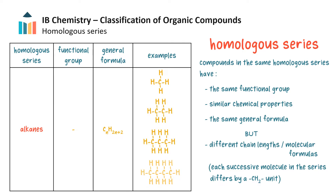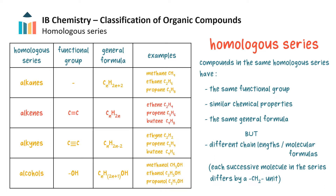The examples in this table — methane, ethane, propane, and butane — form part of a homologous series of alkanes. The alkenes, alkynes, and alcohols are other examples of homologous series.